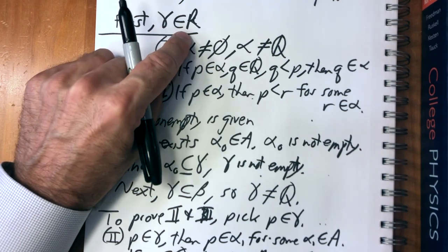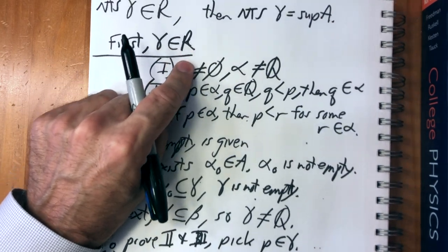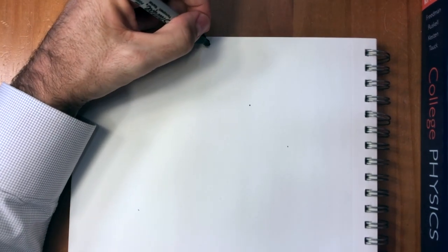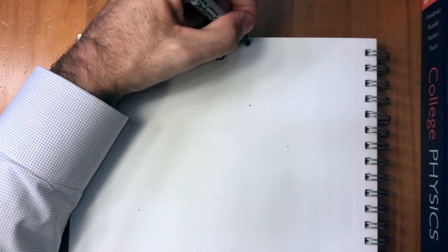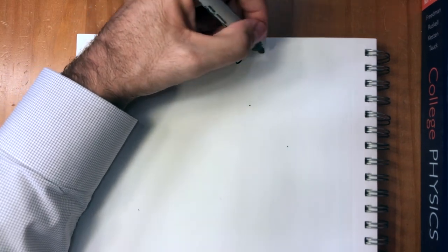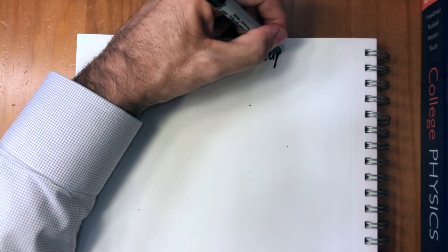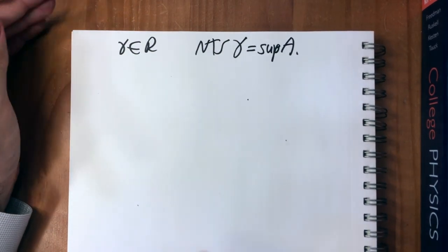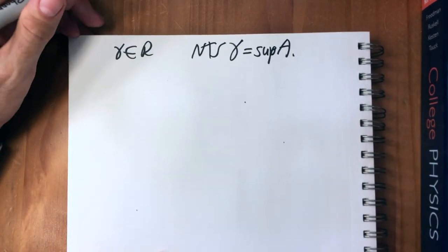We showed gamma is an element of R. Now we have to show that gamma is the least upper bound of A.